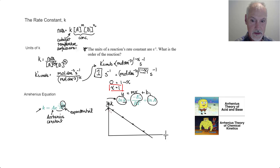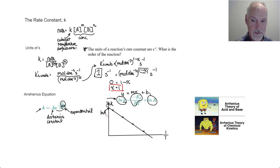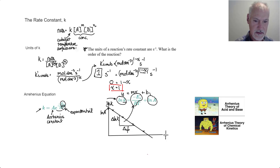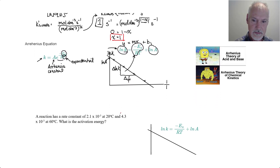If we graph this, we get a straight line. The y-intercept corresponds to the ln of the Arrhenius constant A, and the slope of this line is a measure of −Ea/R — that is, the change in ln(k) divided by the change in one over temperature. Let's employ this idea in the next question.